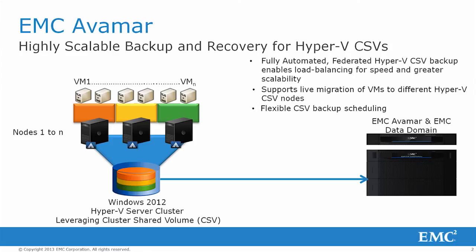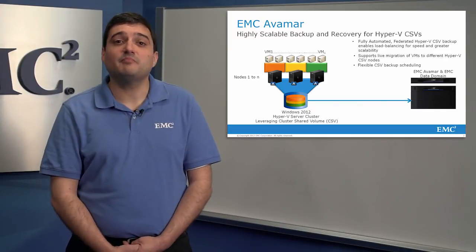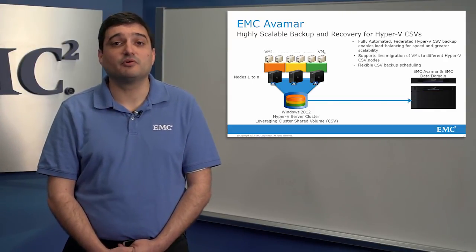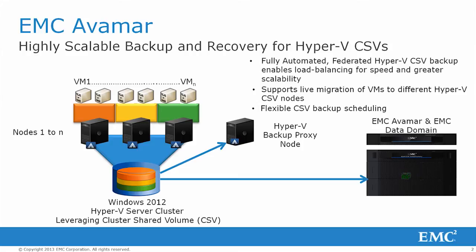Like other backup and recovery use cases where Avamar has been deployed, Avamar provides the ultimate in flexibility for deploying Hyper-V backup for CSVs. Some customers prefer to offload any backup I/O from the Hyper-V production nodes themselves. In this instance, you have the option to deploy a Hyper-V backup proxy node, which you can deploy to handle all the backup and recovery workloads for all VHDs in a particular CSV cluster.